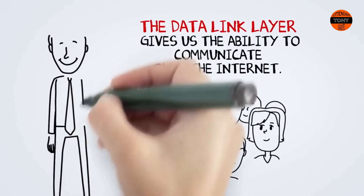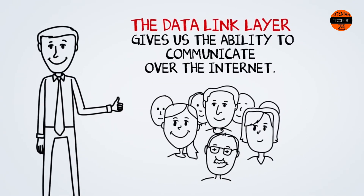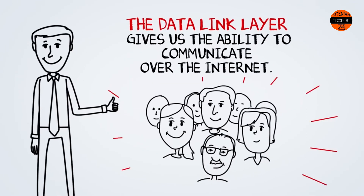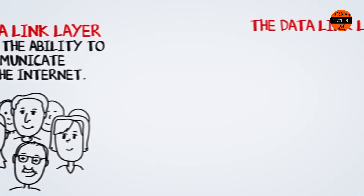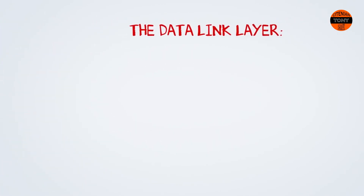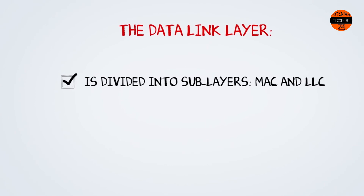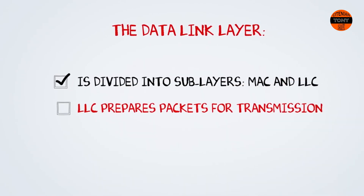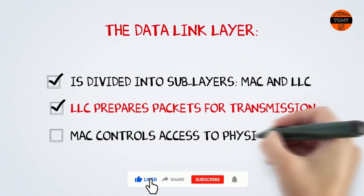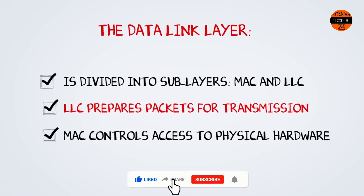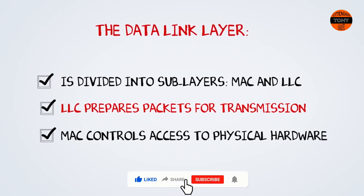The data link layer gives us the ability to communicate with one another over the internet. This has been made possible because the data link layer is divided into the media access control and logical link control sub-layers. The logical link control sub-layer prepares data for transmission, and the media access control sub-layer regulates access to the physical hardware being used.